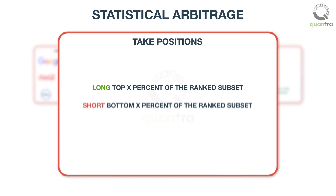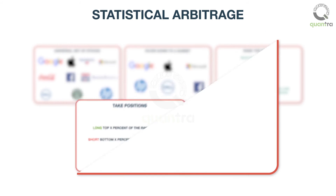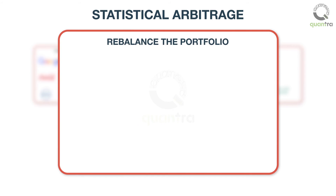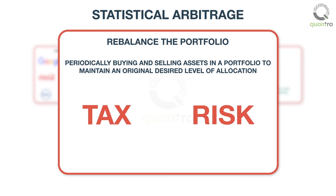Next, we take positions: long the top X percent and short the bottom X percent of the ranked subset. Based on the risk-taking capacity of the system, the values X and Y will be decided. We then continue to rebalance the portfolio. Rebalancing involves periodically buying and selling assets in a portfolio to maintain an original desired level of allocation. Rebalancing can have a large impact on the portfolio in terms of trading costs and taxation. The optimal frequency for rebalancing depends on the assets in the portfolio and must be carefully evaluated to minimize risks.